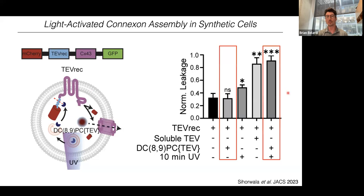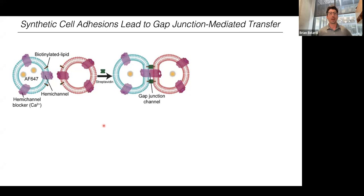Here's the data: this version of connexin 43 has mCherry and the TEV recognition sequence on its N-terminus. Synthetic cells also contain TEV-loaded liposomes but without UV activation — they show low leakage. Then with the same construct but adding 10 minutes of UV light, we're able to turn on leakage from the synthetic cells by rupturing the liposomes, allowing the protease to act on connexin 43 and liberate the N-terminus-free version to assemble into its pore. We published this earlier this year.